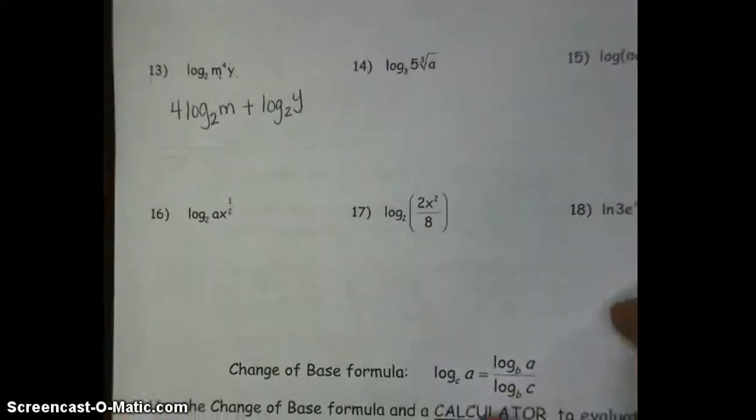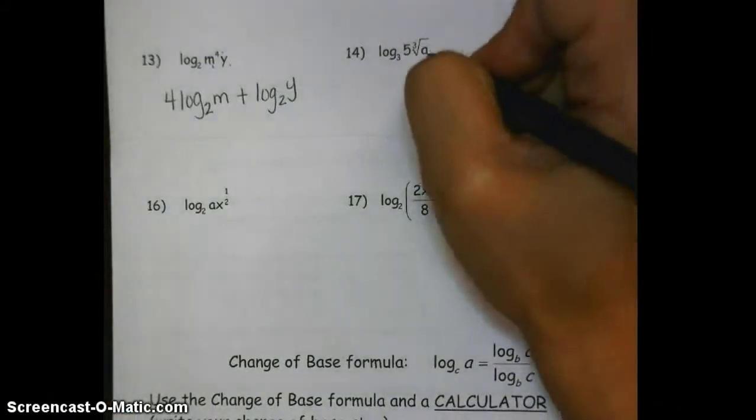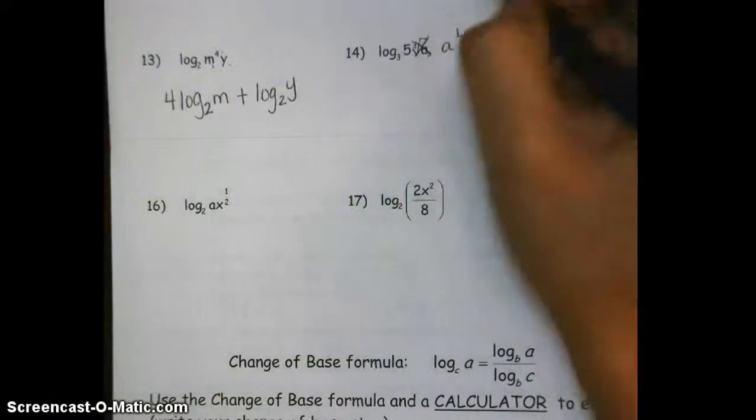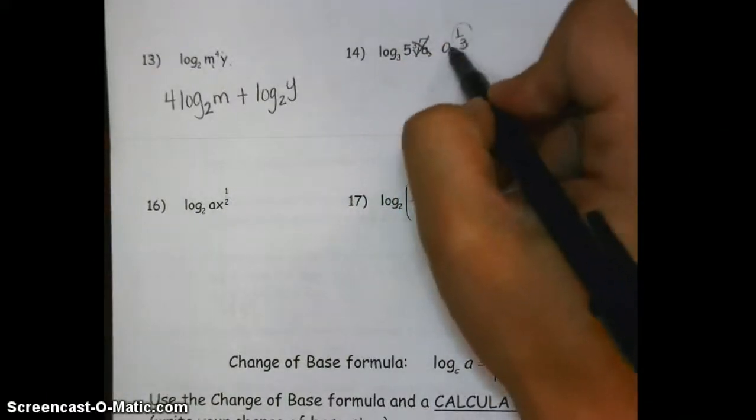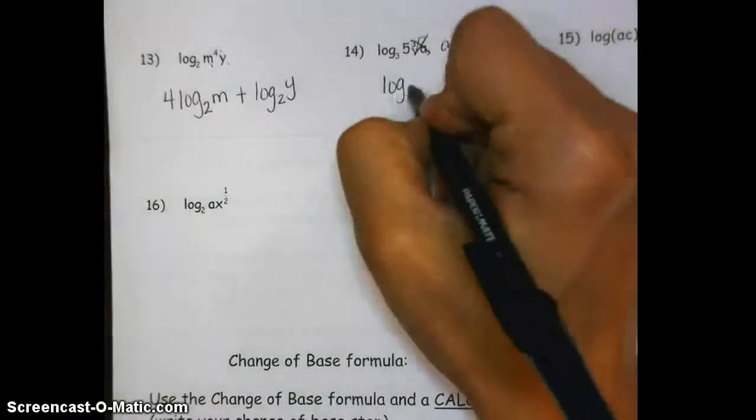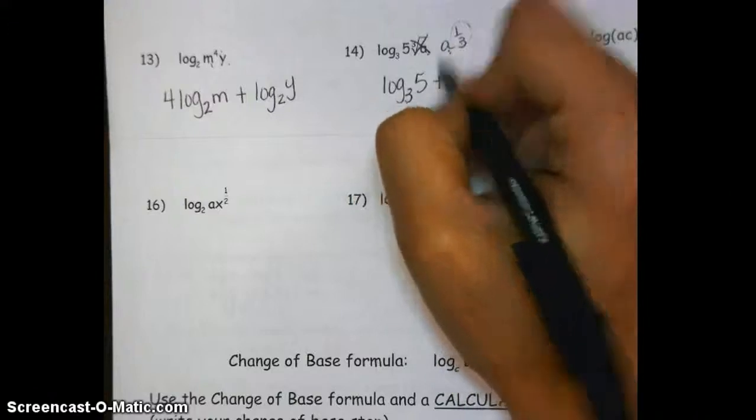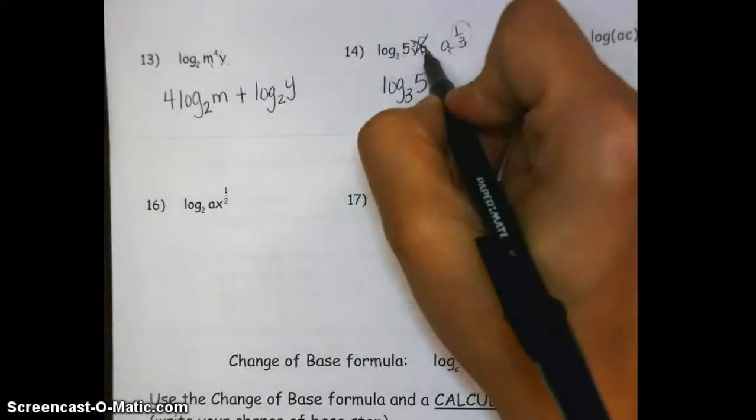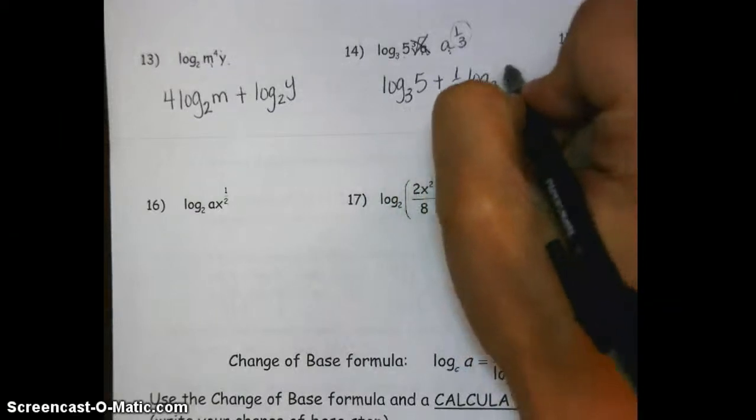On the next one, root 3 of a is really like saying a to the 1/3 power. So I'm going to rewrite that part like this. That way I can see that this is really just a multiplier for that part of the log expression. So now I have log base 3 of 5 plus, because this was a product here, 1/3 log base 3 of a.